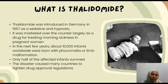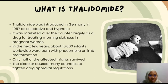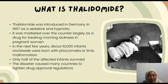So, what is thalidomide? It is a drug that was introduced in Germany in 1957 as a sedative and hypnotic. It was also marketed largely as a drug for treating morning sickness in pregnant women. In the next few years, about 10,000 infants worldwide were born with phocomelia, or limb malformation. Only half of the affected infants survived, and this caused many countries to tighten their drug approval regulations.